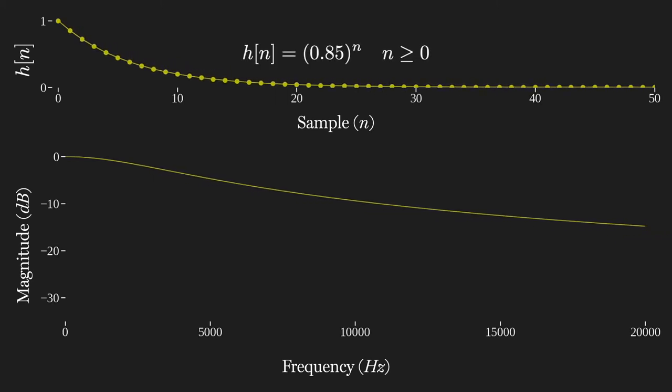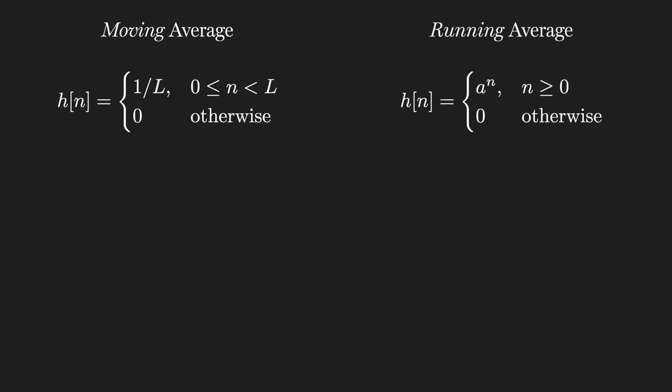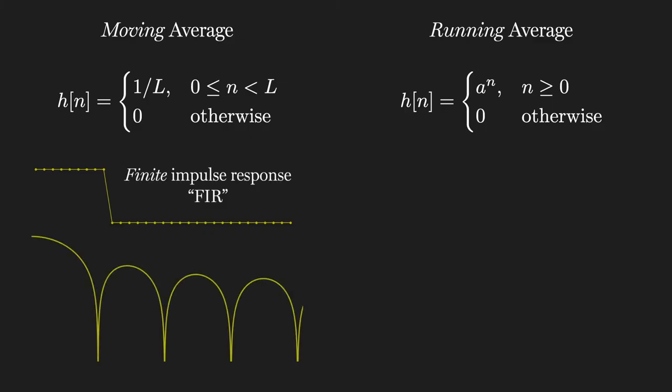The two methods for low-pass filtering we've covered form the basis of all digital filters. The moving average results in an impulse response that at some point becomes zero, hence it is a finite impulse response, or FIR, filter, which has a characteristic frequency response with bumps, or side lobes. The running average filter has an impulse response that approaches but never completely become zero, so it's an infinite impulse response, or IIR filter, which can have a smoother magnitude frequency response. As you might imagine, we can create many variations on either type, changing the weights, durations, and combining FIR and IIR methods to craft all kinds of filters, which we'll cover in future episodes, but in either case, we smooth the signal by convolving it with the impulse response of the filter.